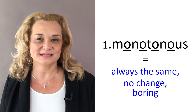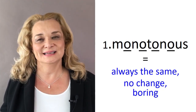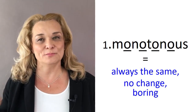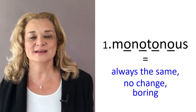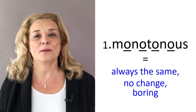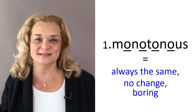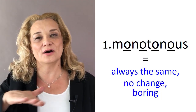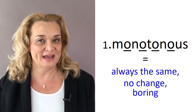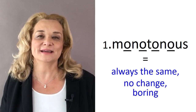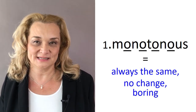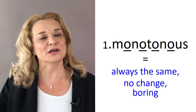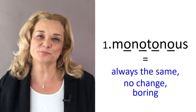Number one: monotonous. There are four O's in that word, so we don't say monotonous — we stress the second syllable: monotonous, and the O-U-S at the end gets reduced. Monotonous means always the same with no change. For example, someone can have a monotonous voice — it's boring to listen to because it doesn't go up and down. It's always pretty flat.